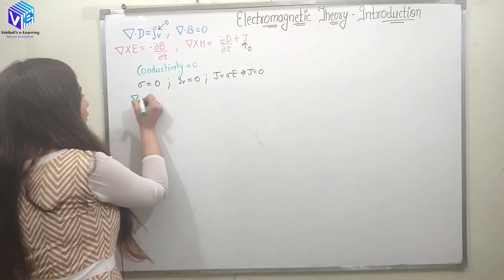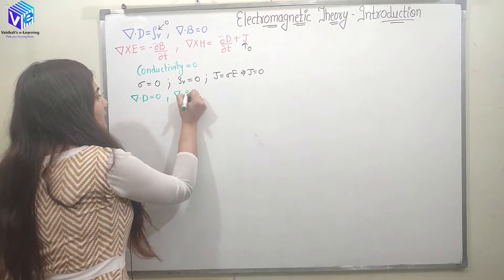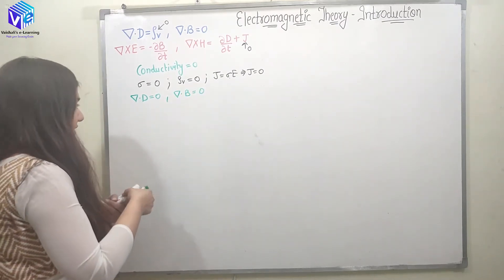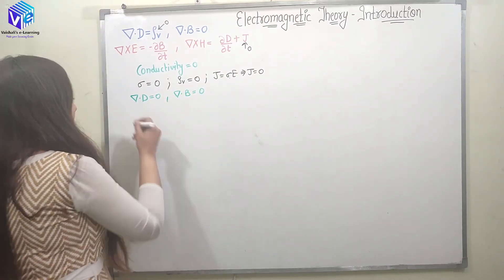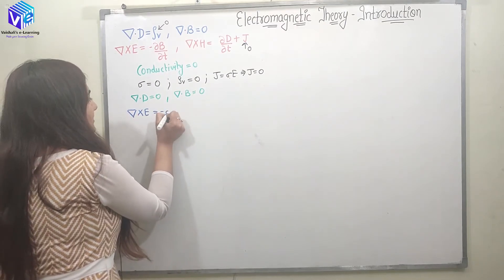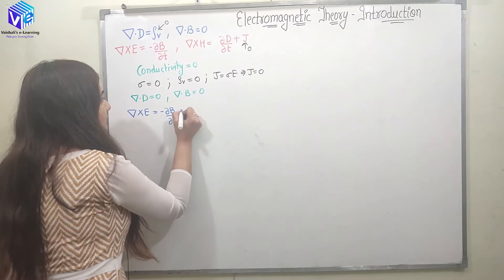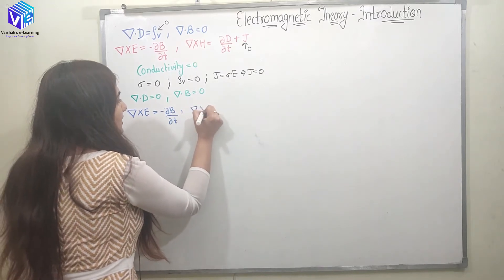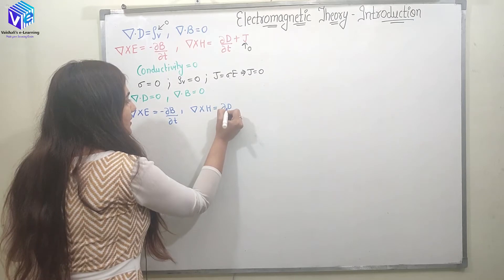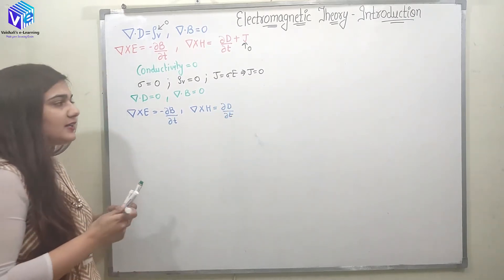With σ = 0, the four modified Maxwell's equations become: ∇·D = 0, ∇·B = 0, ∇×E = −∂B/∂t, and ∇×H = ∂D/∂t.